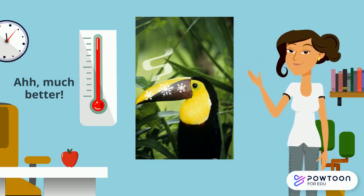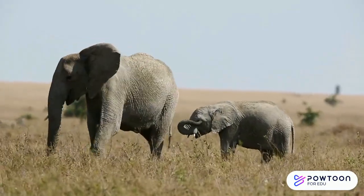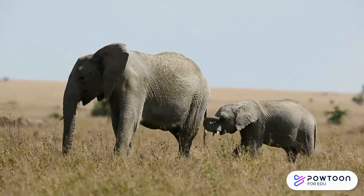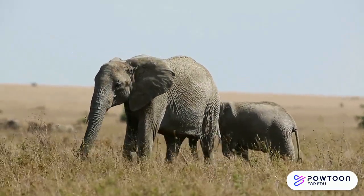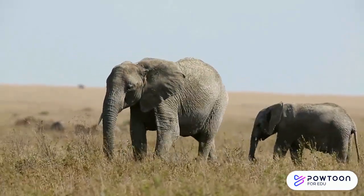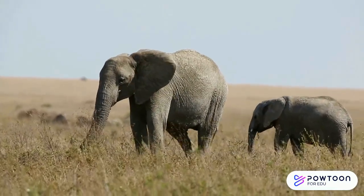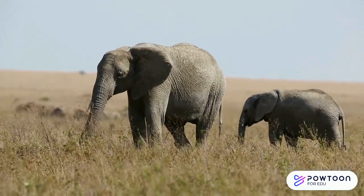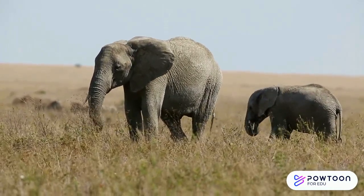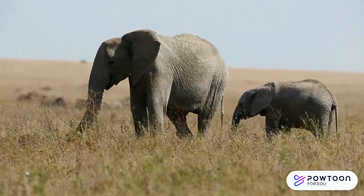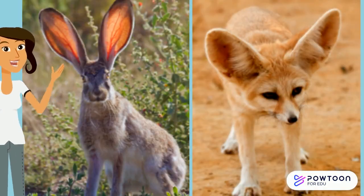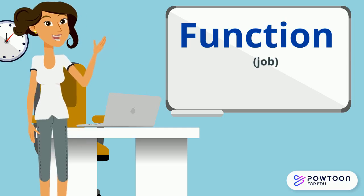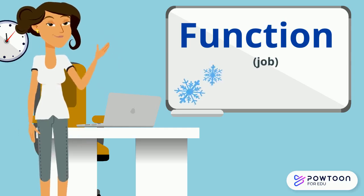Toucans aren't the only animal with structures that help them cool off in the heat. Have you ever wondered why an elephant's ears are so big? When it's really hot, the elephant can send some of its body heat to its ears and flap them around, which helps it to cool off, much like the function of the toucan's beak. Jackrabbits and fennec foxes live in the desert and they also have large ears to release heat. The function of those animal structures is to keep the animal cool.